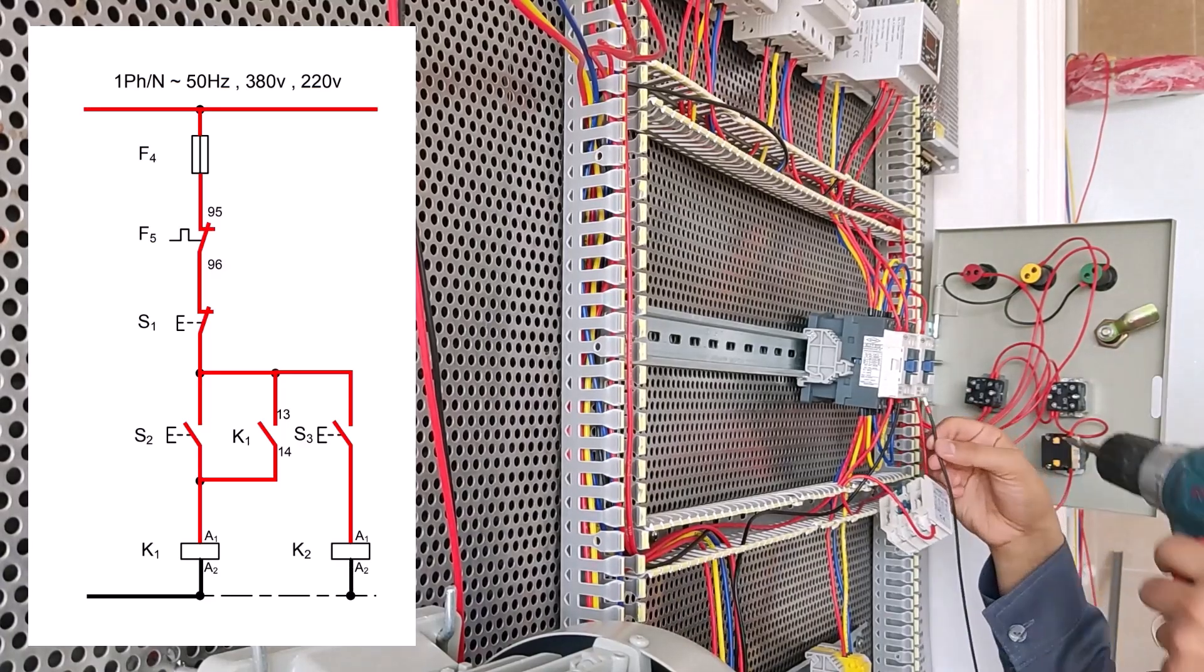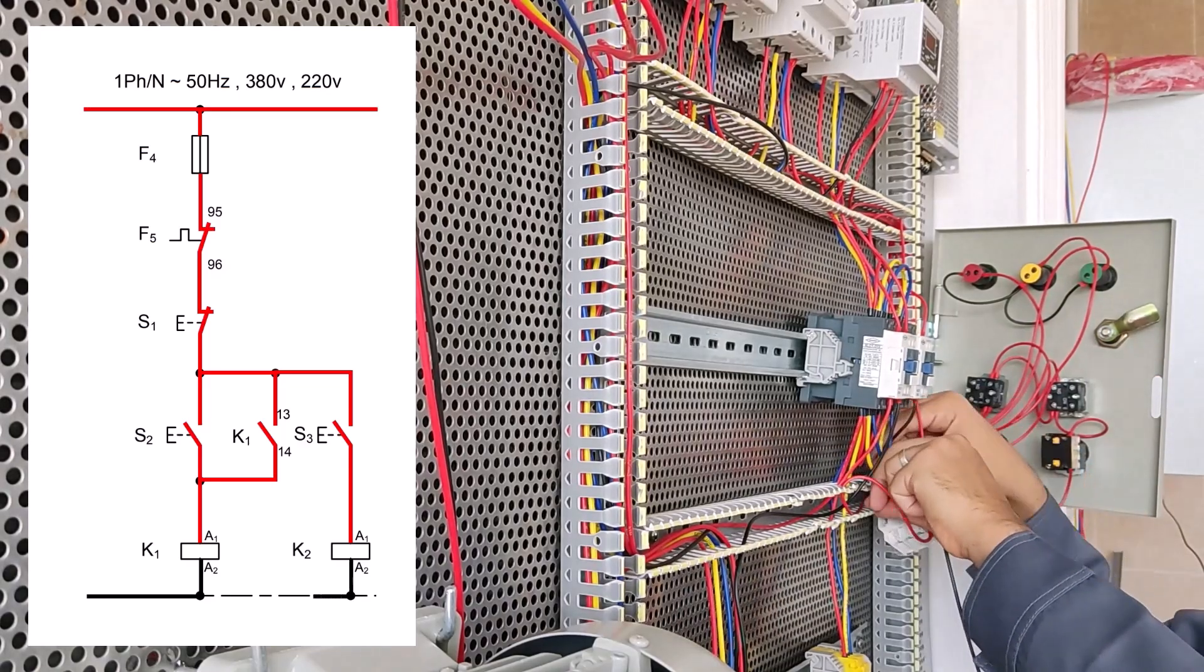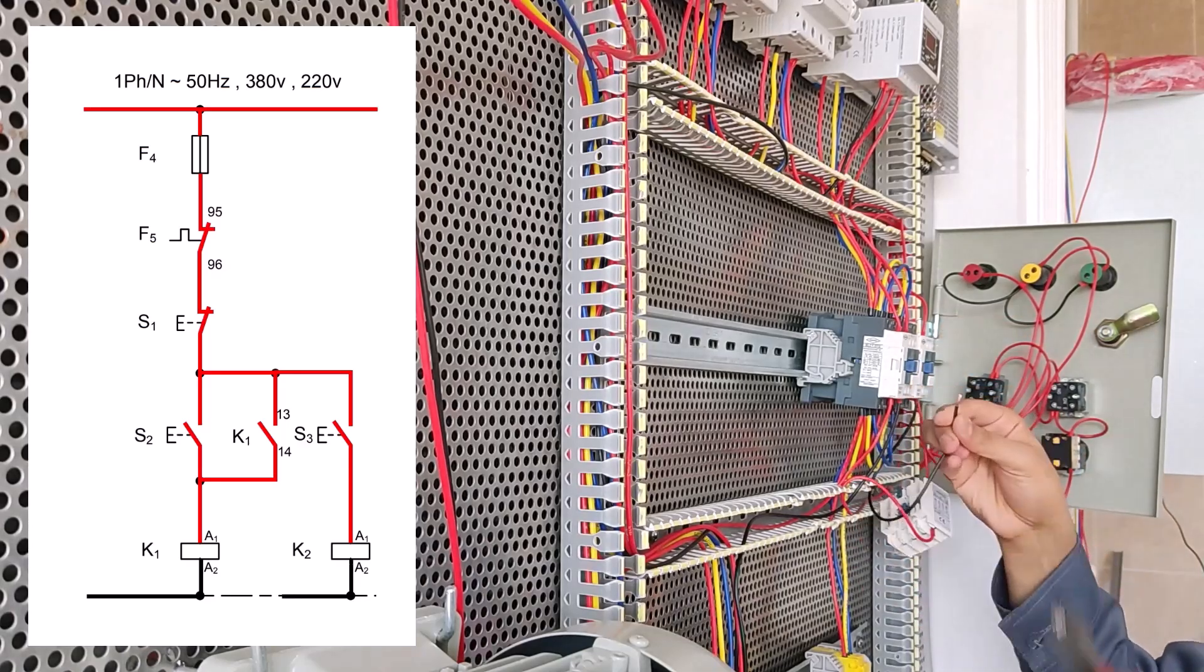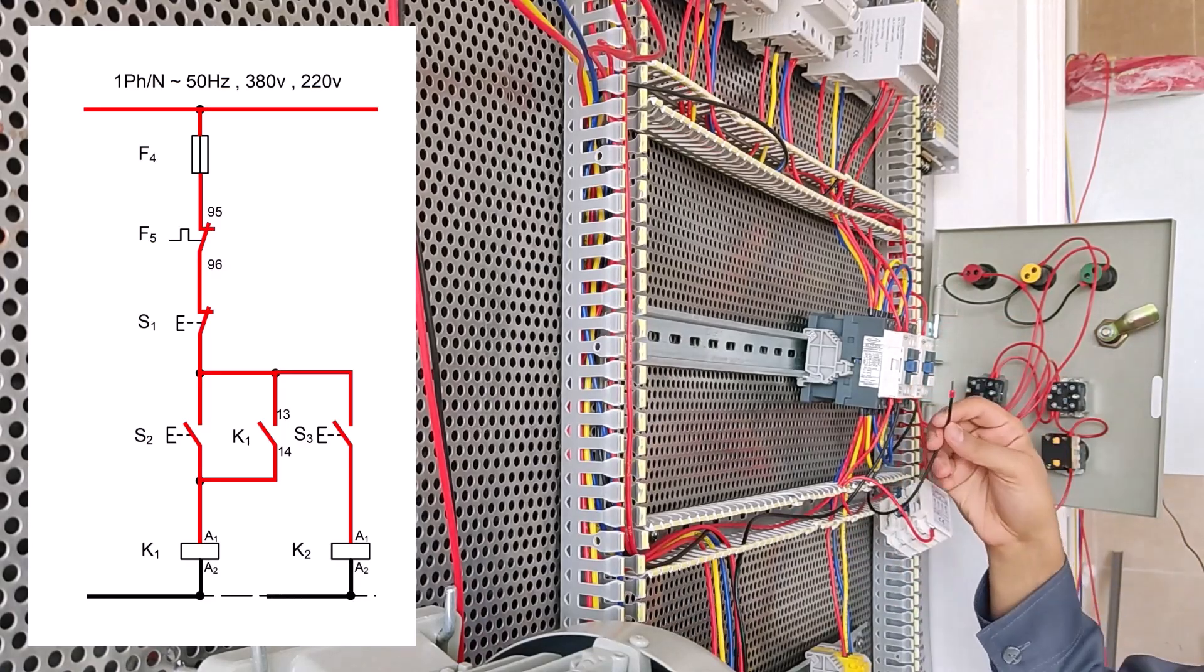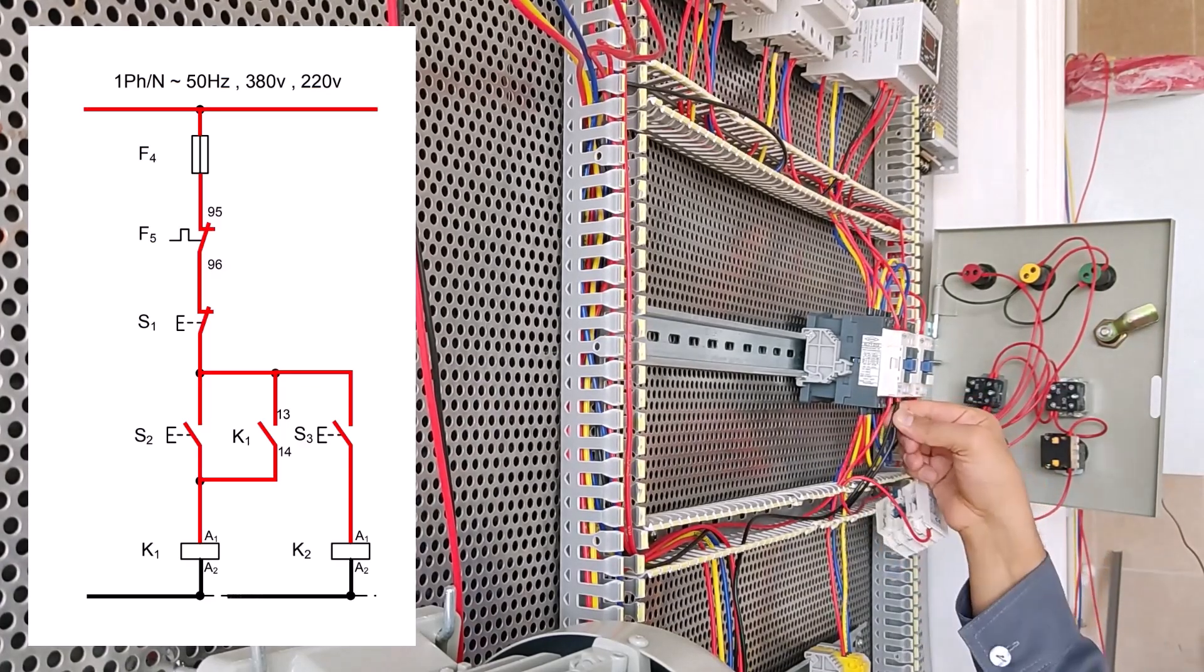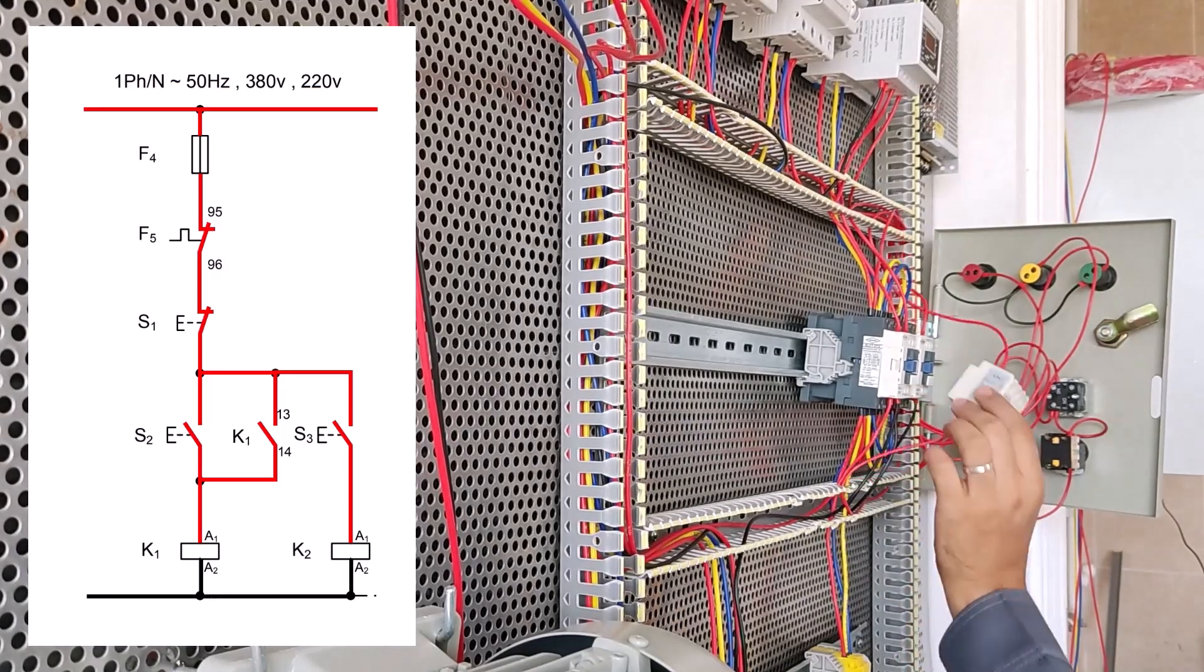And we connect K2 A2 conductor to zero. As you can see in the map, on the map, this is a black line.